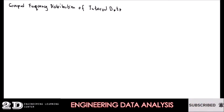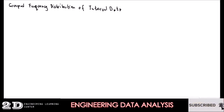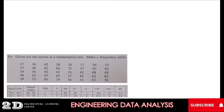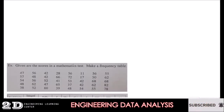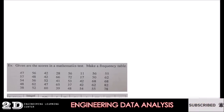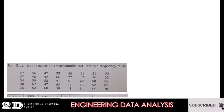So usually, if you are dealing with discrete or continuous data, they will come in a manner like this. This is how they will be presented. We have given the scores in a mathematics test, and we have the frequency table of this set of data.